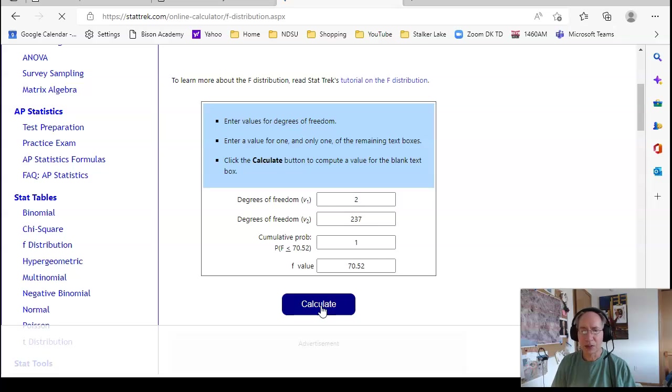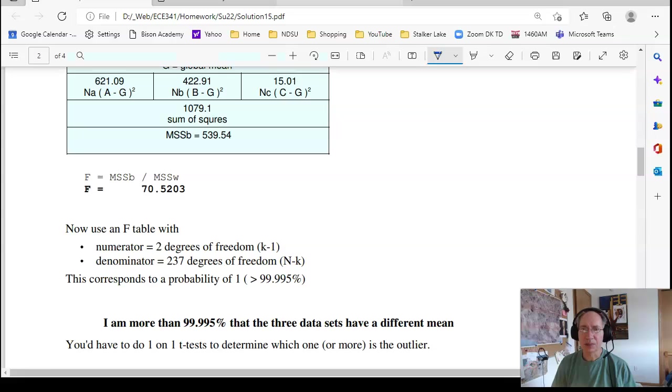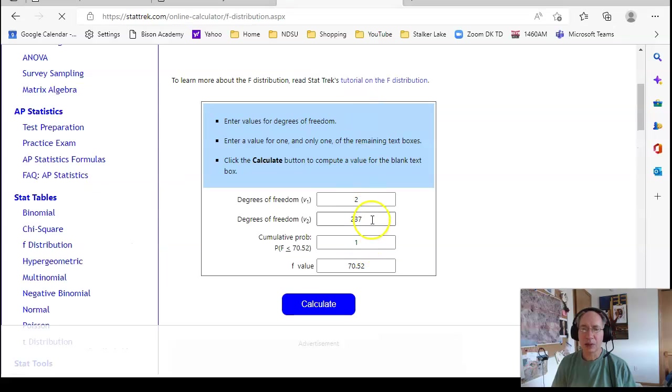That gives you the probability, basically one. So with 80 data points, I can tell these are really three different months. It depends upon the amount of data you have. If I only had 10 data points for each one, that gives you 30 minus three, or 27 data points.